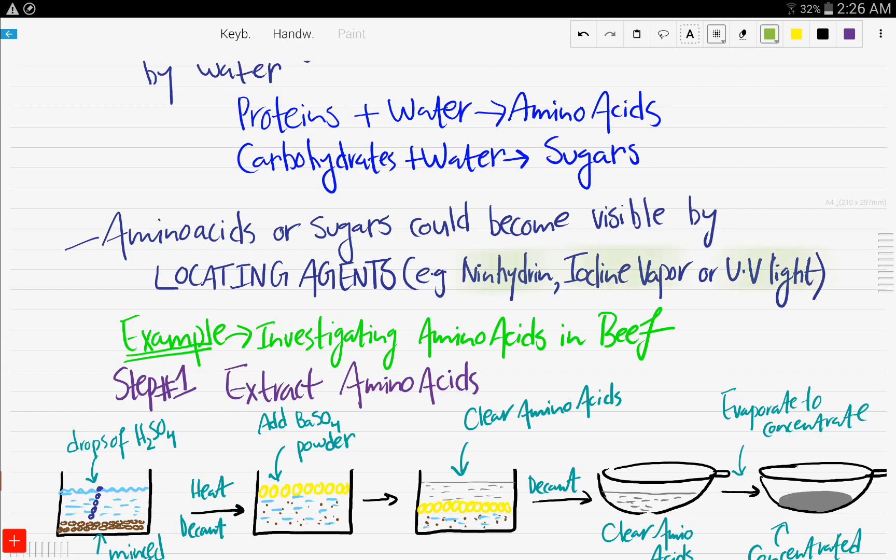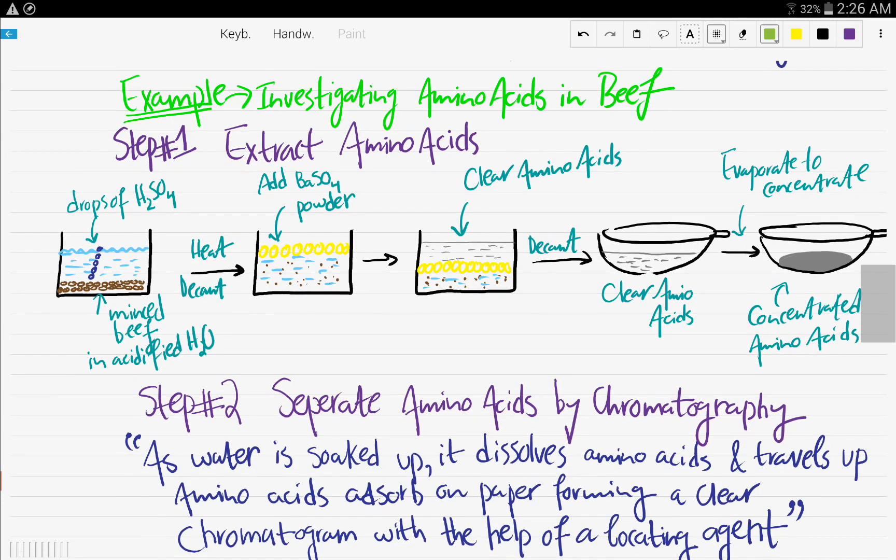So let's get into an example to have a more clear understanding of that. So investigating amino acids in beef. Step number one, we're going to extract the amino acids, just like we extracted the dye a few moments ago. So you put the minced meat in acidified water and you acidify using drops of sulfuric acid, H2SO4.